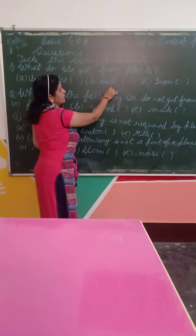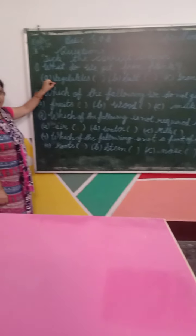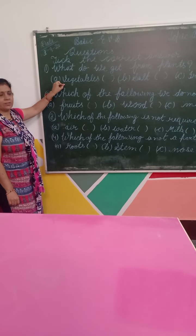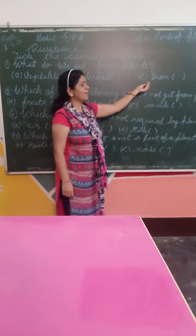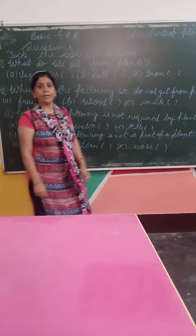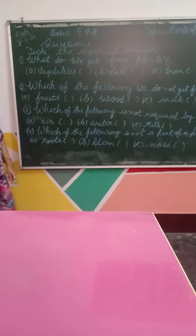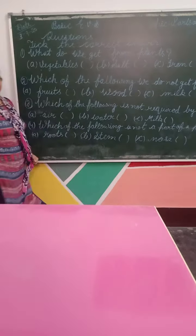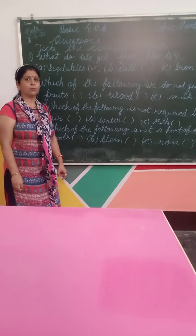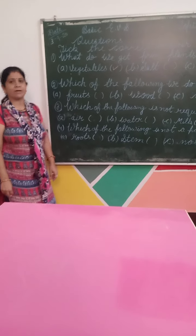So, what do we get from plants? Tell me, what do we get from plants? Vegetables, Seeds, Iron. Very good. Vegetables. We get vegetables from plants.